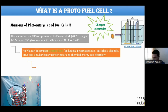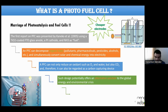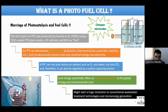A photocatalytic cell can decompose organic pollutants — not only hydrogen. We can use pollutants, pharmaceuticals, pesticides, and alcohols as fuel, simultaneously converting chemical and solar energy into electricity. We can also use CO2 as the oxidant, making it a carbon-capturing device. This design potentially offers an alternative solution to global energy and environmental problems, and might enable a huge evolution in wastewater treatment technologies and micro-energy generation, since both can happen in the same device.